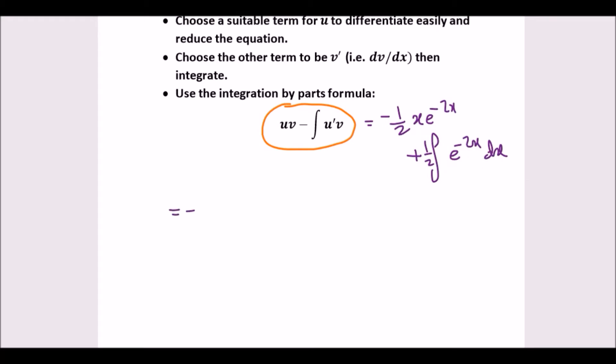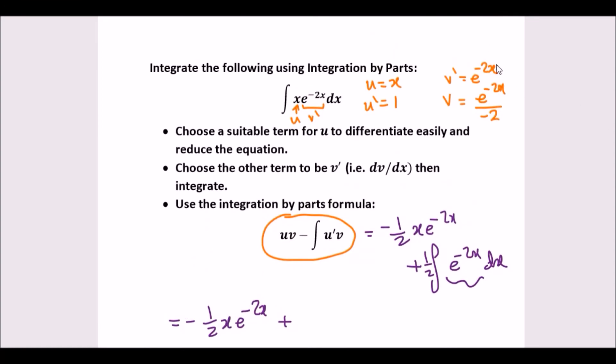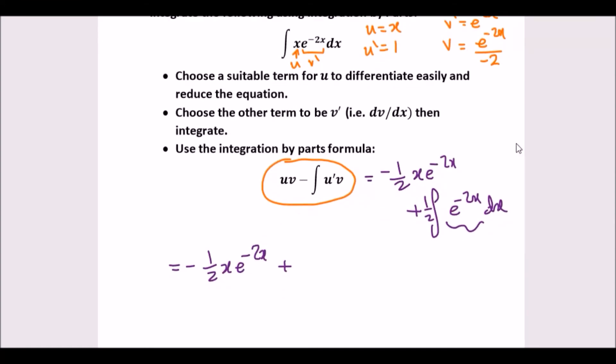Rewriting it properly, we get minus half x e to negative 2x, plus now integrating this one is exactly the same as what we just did. You're going to get e to negative 2x over minus 2. So this is going to be negative quarter, minus 1 over 4 e to the negative 2x, and that's it, plus c.